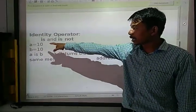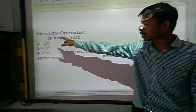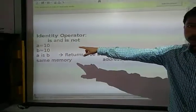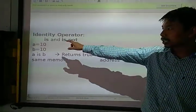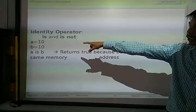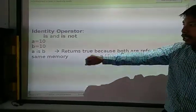Here as you can see, a is indicating to 10, meaning where the 10 value is in the memory. Then b is equal to 10. The b is also pointing to the same address where the 10 value is there.